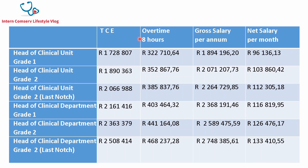Now let's look at the head of clinical unit and head of clinical department. Overtime is usually capped at eight hours for these roles, as they are supervisory rather than production in nature. The head of clinical unit grade two on the last notch earns a gross salary of 2,264,729 rand and a net of 112,305 rand after taxes and pension. The head of clinical department grade one salary is 2,368,191.46 rand, giving a net salary of 116,819.95 rand. The head of clinical department on the last notch is 2,748,385.61 rand, giving a net salary of 133,410 rand.